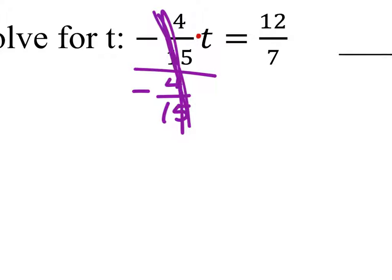But if I do it to one side, I've also got to do it to the other side. So I'll take that twelve-sevenths and divide it by negative 4 fifteenths.